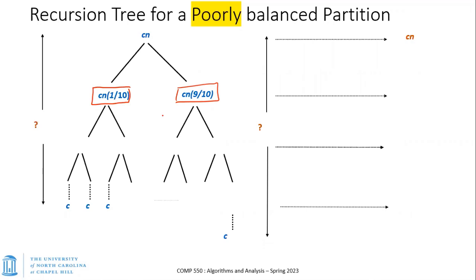Intuitively you might expect it to be closer to the worst case n². But let's analyze the recursion tree: it's divided into one-tenth and nine-tenths each time. The next layer is 10% and 90%, and the layer after that is 81/100 and 9²/10². It's completely imbalanced but not all the way — it's always going to be 9/10 on one side.